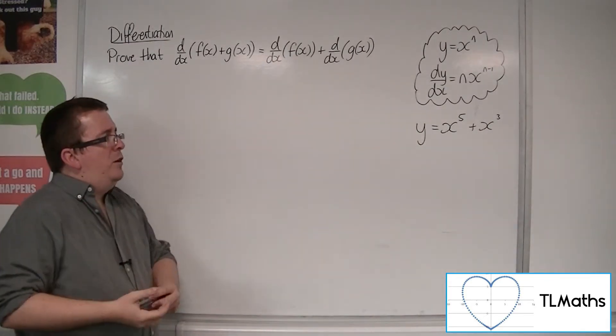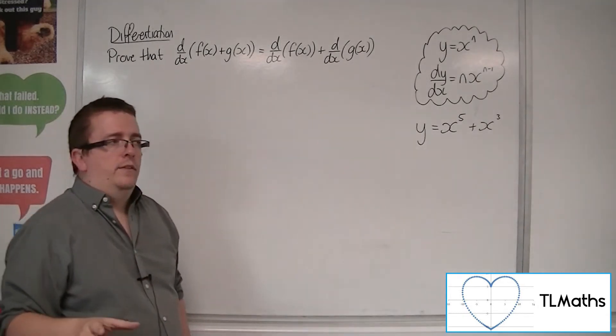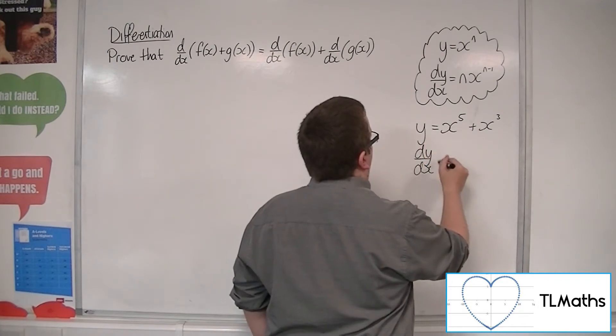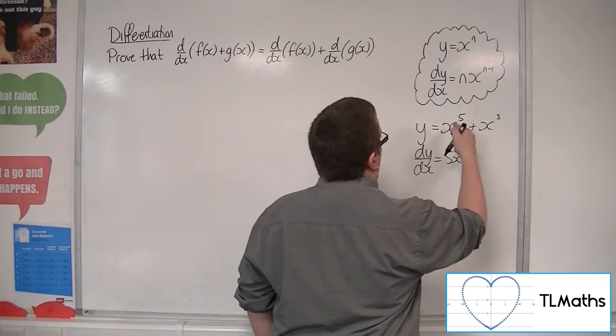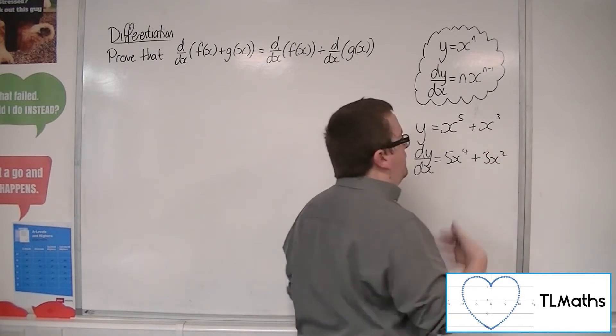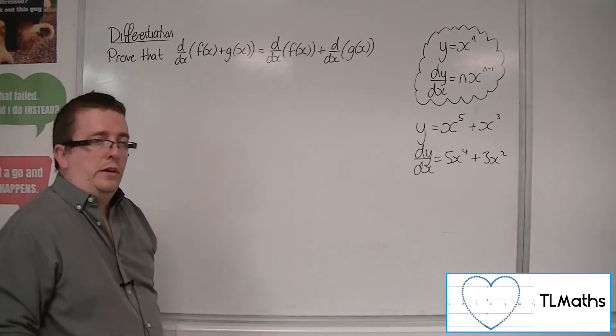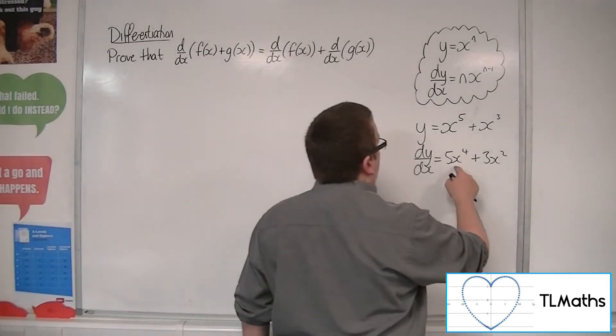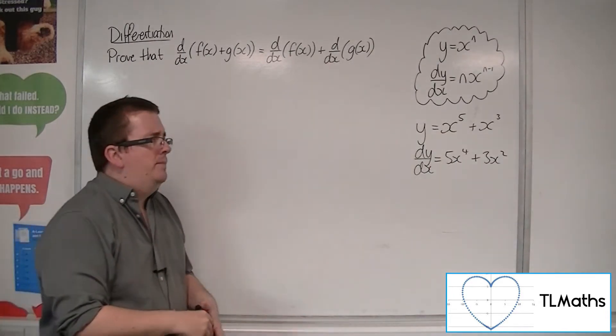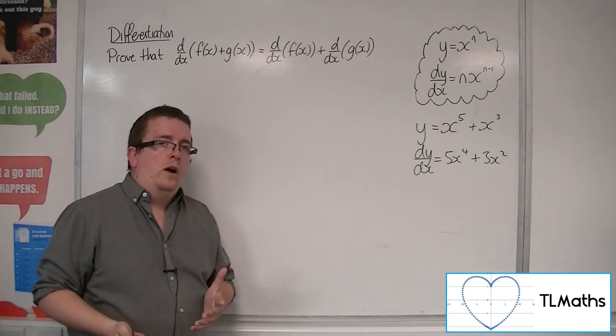Now it doesn't naturally then say that dy by dx must be the derivative of this plus the derivative of this. That would be your kind of gut feeling that that makes sense. I differentiate this one, I differentiate that one, and that's my result. But it shouldn't automatically follow that that must work.